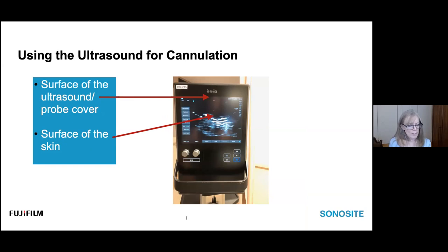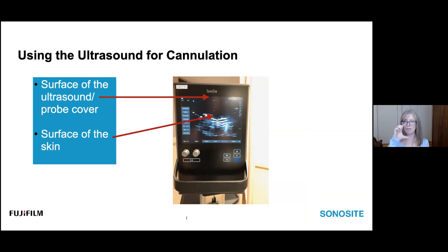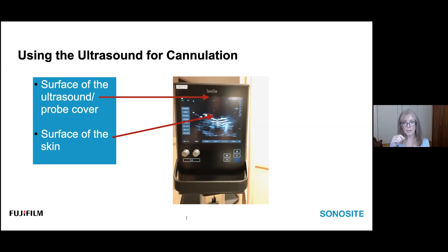When using a lot of gel, the top of the screen is not the surface of the patient's skin. The gel creates distance, so the top arrow indicates the top of the image while the bottom arrow indicates the actual surface of the patient's skin. This matters when determining vessel depth, which affects the angle of approach for cannulation.